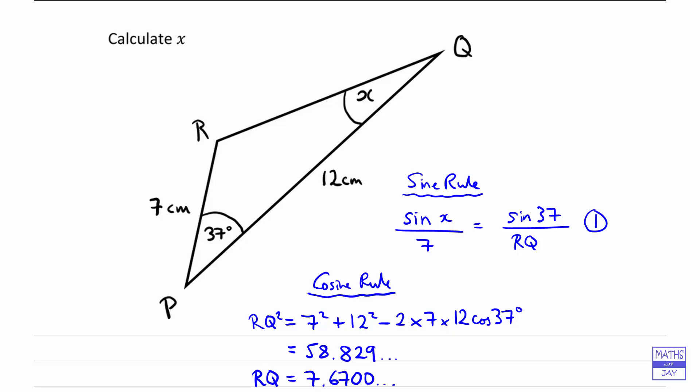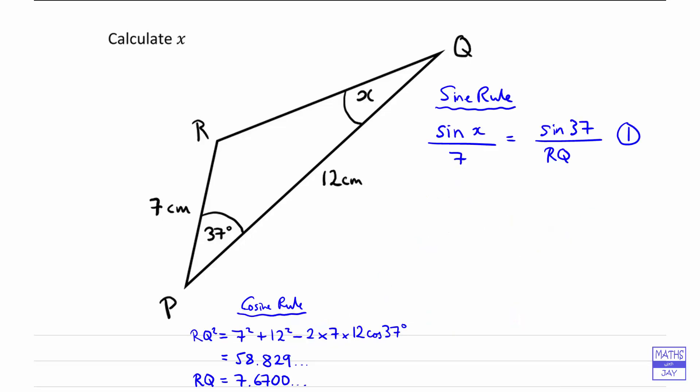So let's have a look at how that works, and I think we need to make ourselves a bit of space first. Right, so what we could do is first of all just make sine x the subject of this, couldn't we? So we've got 7 sin 37 over RQ,